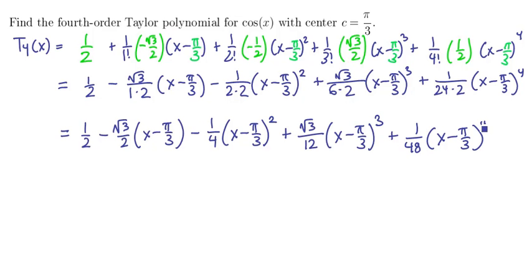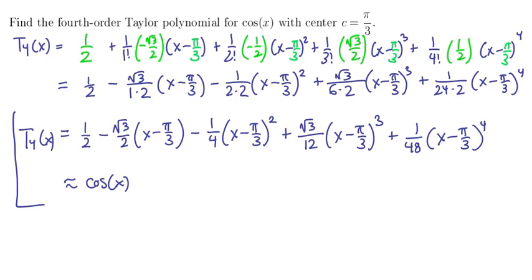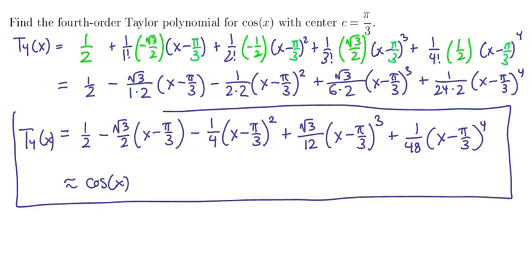Remember, we're not going to expand these terms — we leave it in this form as the fourth-order polynomial. This is also an approximation of cosine of x, and so this fourth-order Taylor approximation of cosine centered at pi over 3 is our answer.